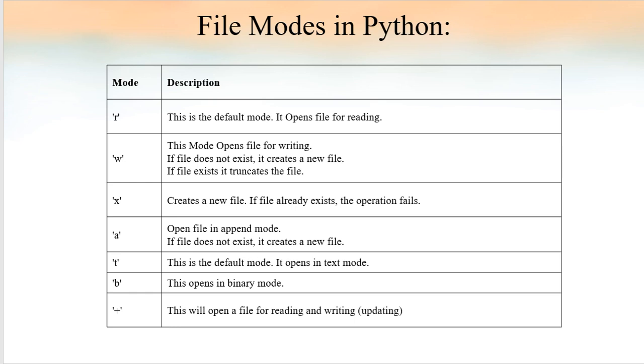fp is equal to open of abc.txt, r. So abc.txt is the file name and r is the file mode of that statement.